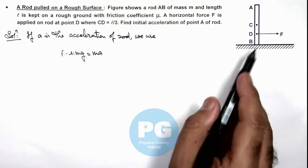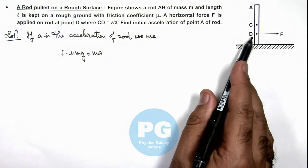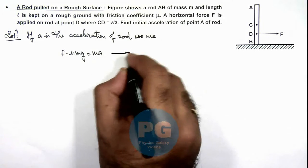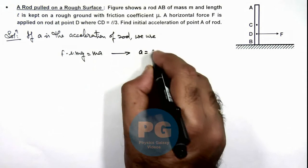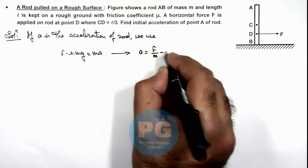Where μ is the friction coefficient between rod and ground. So this is giving us the value of acceleration of rod as F by m minus μg.